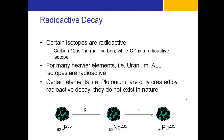What that means, essentially, is that every time an electron leaves the nucleus of an atom, it turns a neutron into a proton and emits an electron that is now free in the atmosphere. That, greatly simplified, is how you synthesize a new element in the lab.